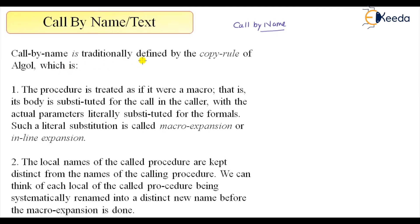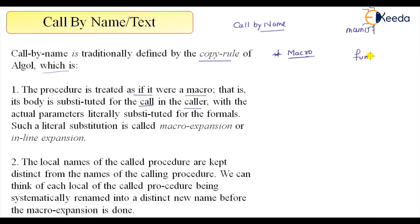Call by name is traditionally defined by the copy rule of ALGOL, which states that the procedure is treated as if it were a macro. The important point is that the procedure is treated as a macro — that is, its body is substituted for the call in the caller. Generally, what happens is that a main function is there, a call to a function occurs, then there is termination, and then there is again a function.